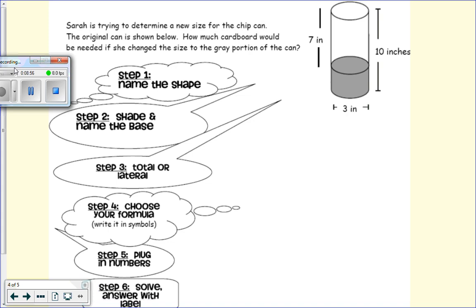All right. So we know we are working with a cylinder. Shade the base. So we have our base here, right? We just want the gray portion. We know the height connects our bases, right?